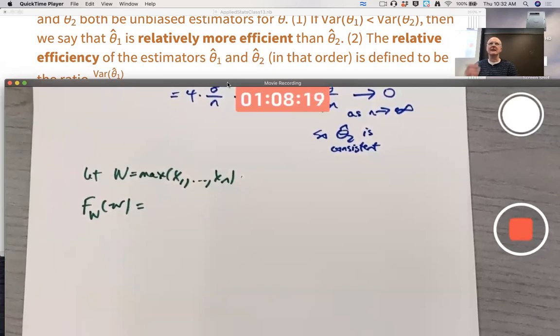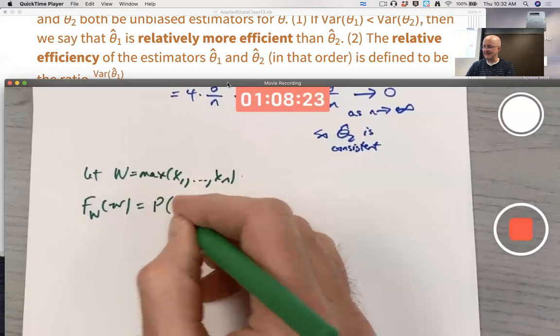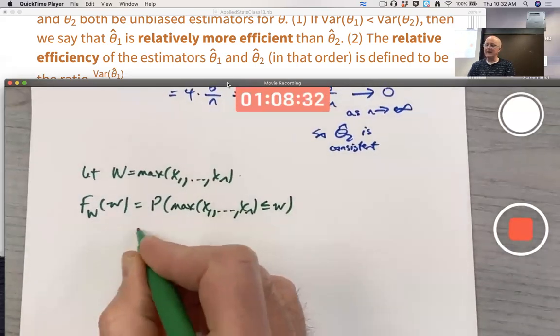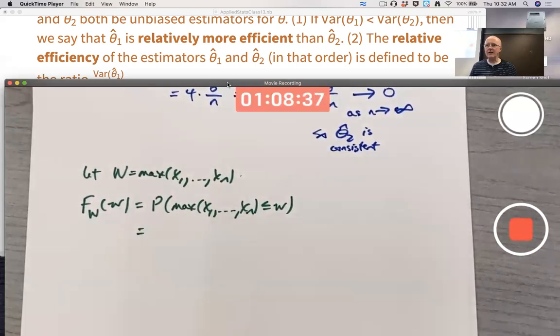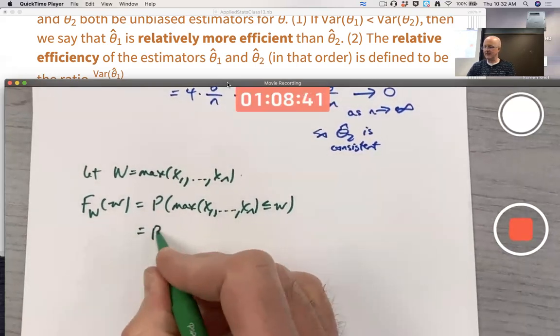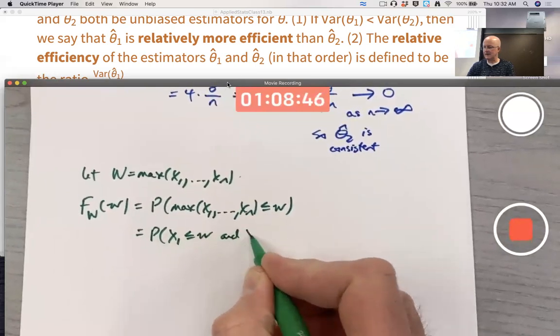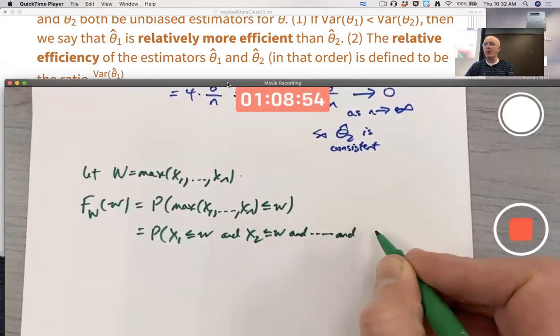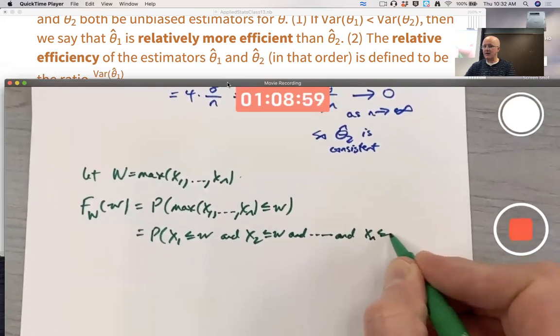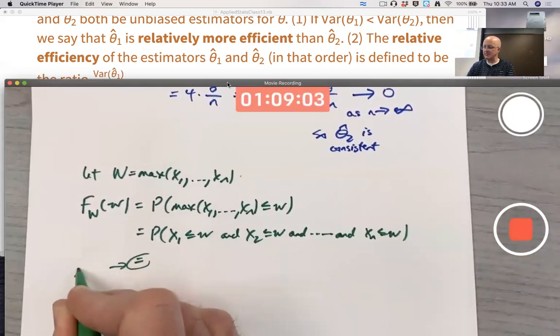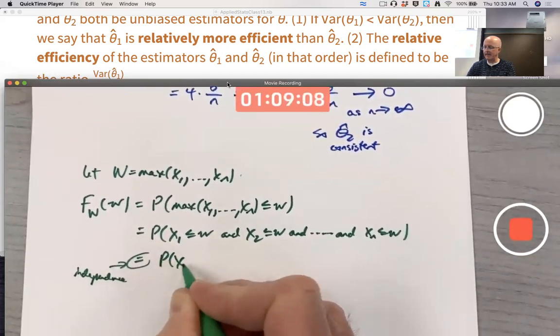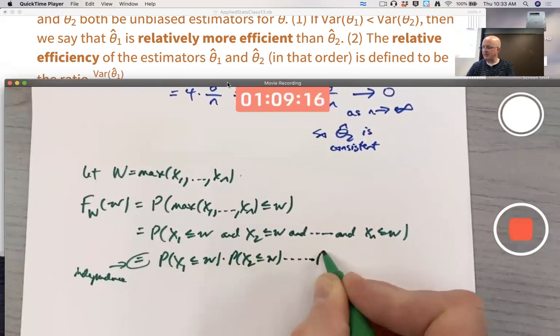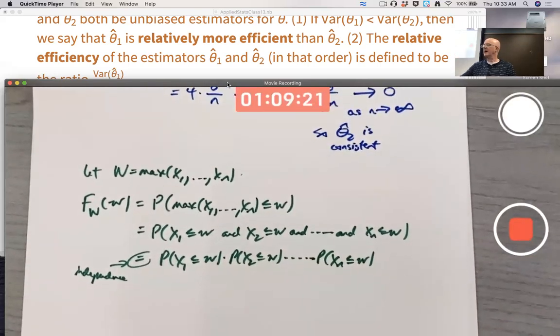If the maximum of n numbers is less than or equal to w, that means all the numbers must be less than or equal to w. Does that make sense? If the biggest of a list of numbers is less than or equal to 10, then all the numbers have to be less than or equal to 10, because if any one of them were bigger than 10, the maximum would be bigger than 10. So I got a bunch of ands here. Our old friend independence comes into play again. You can multiply all these probabilities. Begging a question, what are those probabilities?